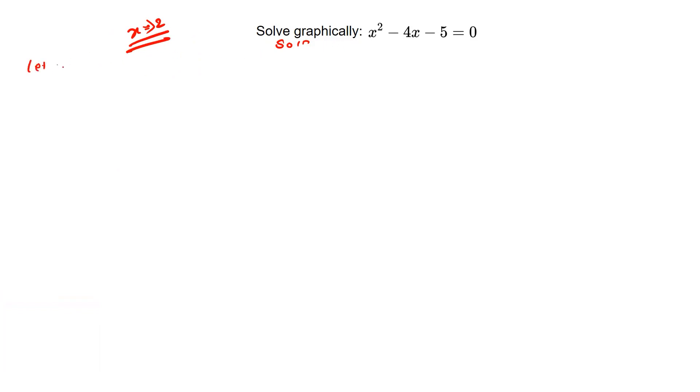Let's suppose we set y equals to x square. Then we can write y equals to x square minus 4x minus 5 equals to zero. This is equation one. This equation represents a parabola.